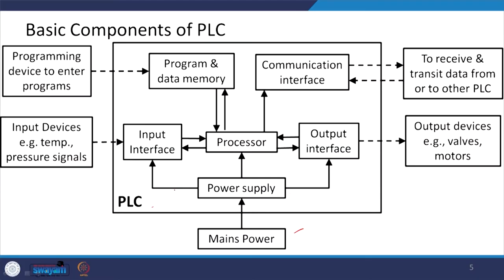The basic components of a PLC include the power supply, input interface, output interface, processor, program and data memory, and communication interface. The input interface receives inputs from devices such as temperature or pressure signals. Program and data memory receives instructions from the programming device. The communication interface receives and transmits data from other PLCs. The output interface connects to output devices such as valves or motors.